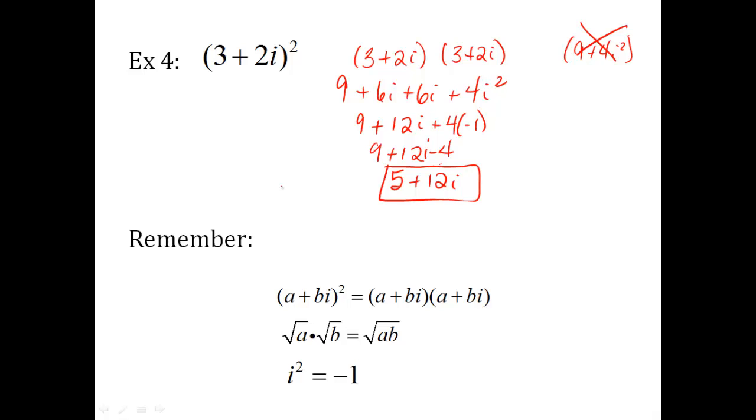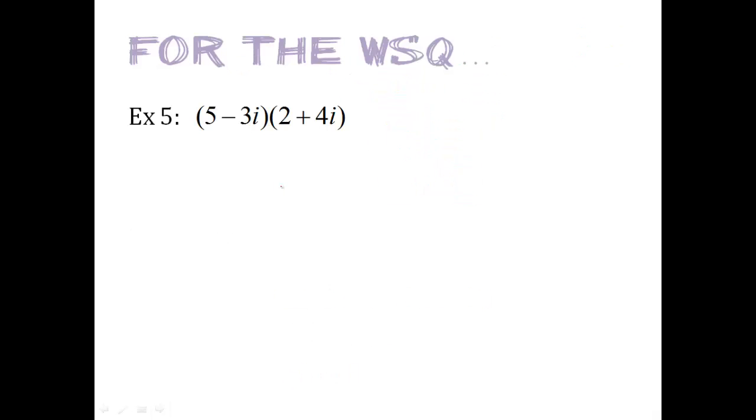So things to remember as you're doing this. Remember, if it's a complex number being squared, you have to write it out: a plus bi times a plus bi, box or FOIL. So if you're multiplying square roots, remember what gets under the square root gets multiplied by what's under another square root. So you will see that on some of the problems today. i squared, remember, is just negative one. So always simplify it. Do not leave i squared in your answer.